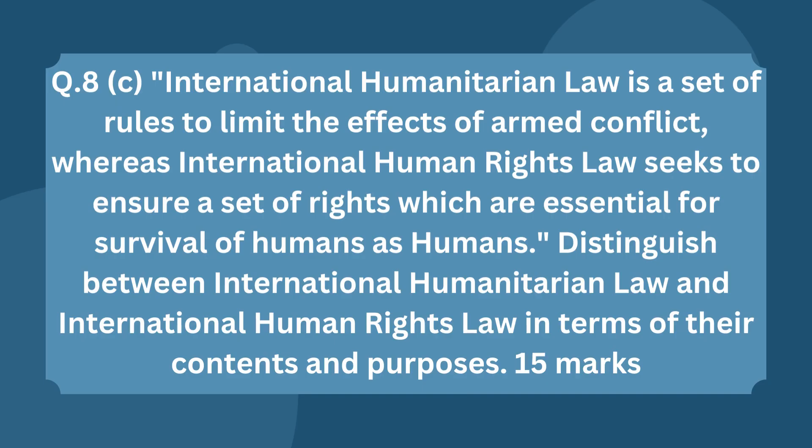The last question of Paper 1 states: 'International humanitarian law is a set of rules to limit the effects of armed conflict, whereas international human rights law seeks to ensure a set of rights essential for the survival of humans as humans. Distinguish between IHL and IHRL in terms of their contents and purposes.' Simply distinguish between the content and purpose of international humanitarian law and international human rights law.